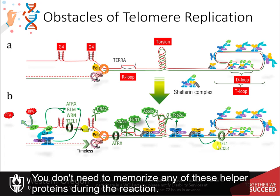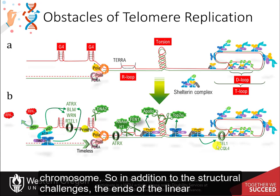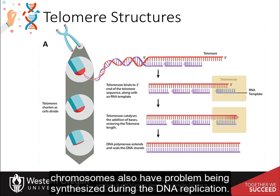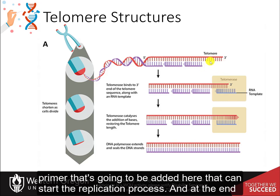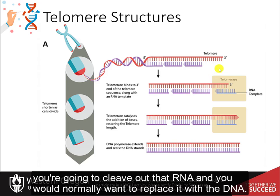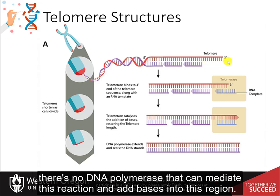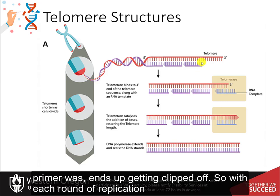You don't need to memorize any of these helper proteins — just realize that it's a really complicated process to replicate the ends of the chromosome. In addition to these structural challenges, the ends of linear chromosomes also have a problem being synthesized during DNA replication. At the very end of the chromosome, an RNA primer is added to start the replication process, but after cleavage of that RNA, there is no primer to add nucleotides onto the 3' hydroxyl, so no DNA polymerase can fill in this region. The sequence at this very end where the RNA primer was ends up getting clipped off.